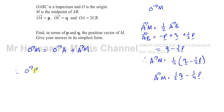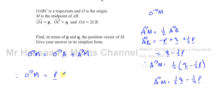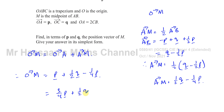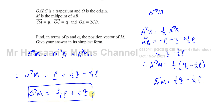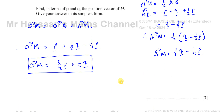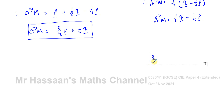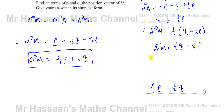So from O to M — which is the position vector of M we're trying to find — is O to A, which is p, plus A to M, which is ½q minus ¼p. Combining: p minus ¼p is ¾p, plus ½q. So the position vector of M is ¾p + ½q, and that's the answer.